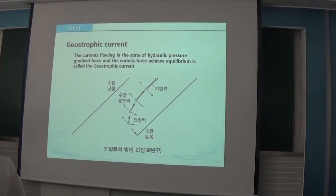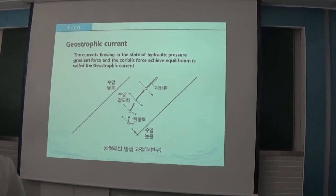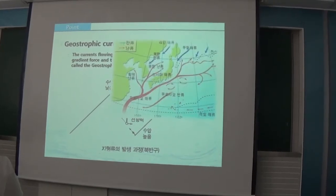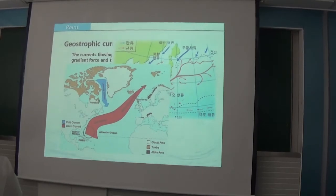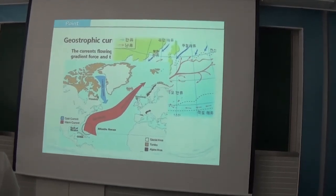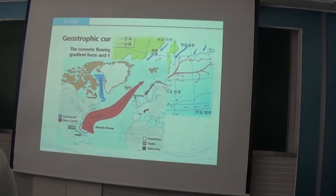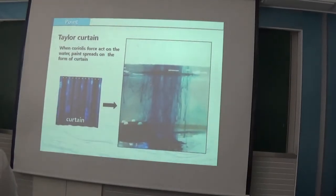For example, like the North Pacific current and North Atlantic current, many major ocean currents have characteristics of geostrophic current. Third is the Taylor column.